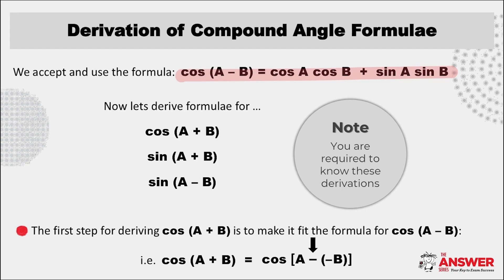We start here with looking to derive a formula for cos(A + B). The first step is to make it fit the formula for cos(A - B), and we do this by making this a minus and making B negative. Minus times a minus is a plus, so these two are definitely still equal to each other.